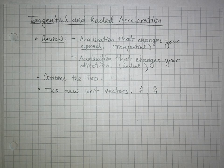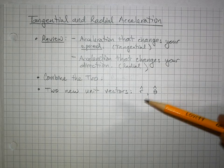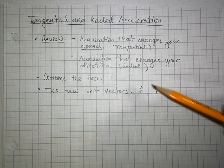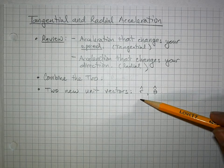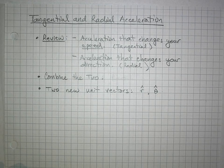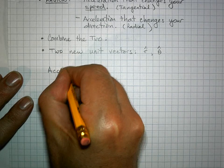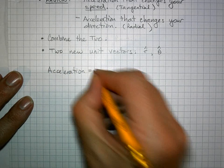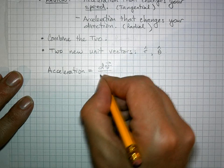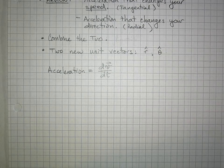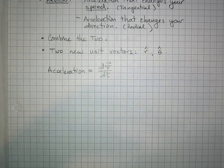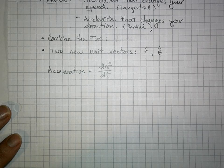In doing so we're going to use two new unit vectors: r-hat and theta-hat. R-hat is worth really paying attention to because it will be used a lot later on. We defined acceleration as the rate of change of velocity — dv/dt — the rate at which the velocity vector changes.